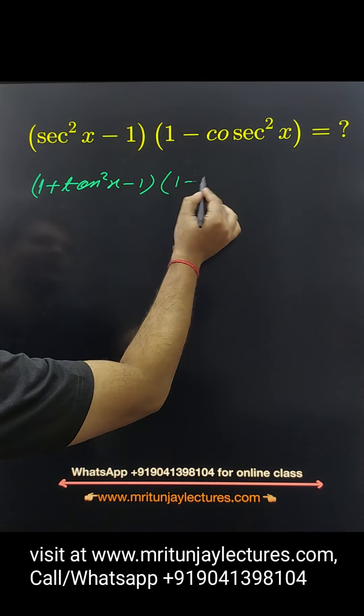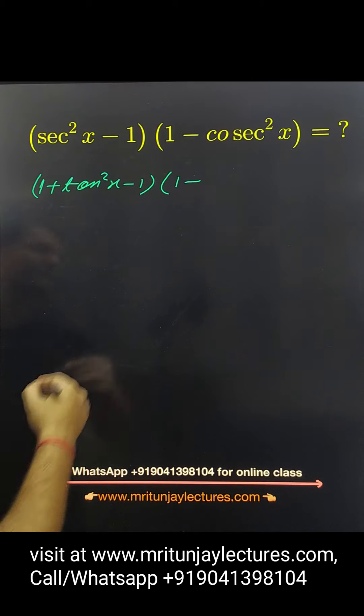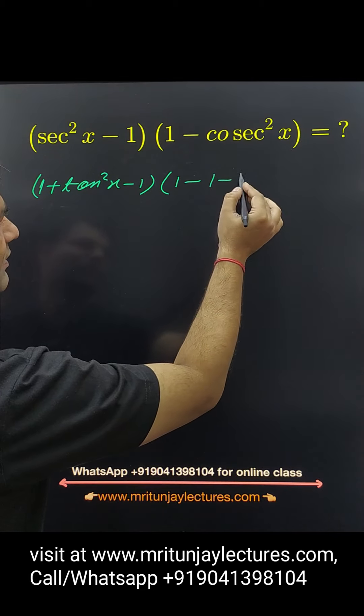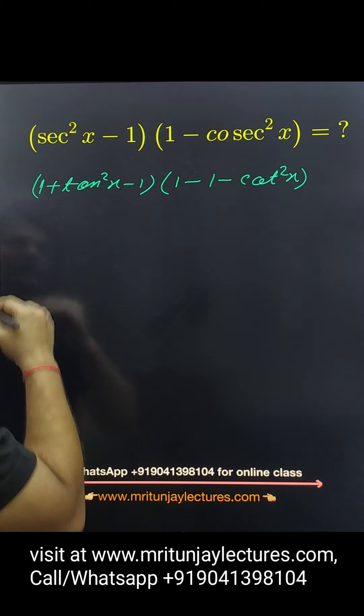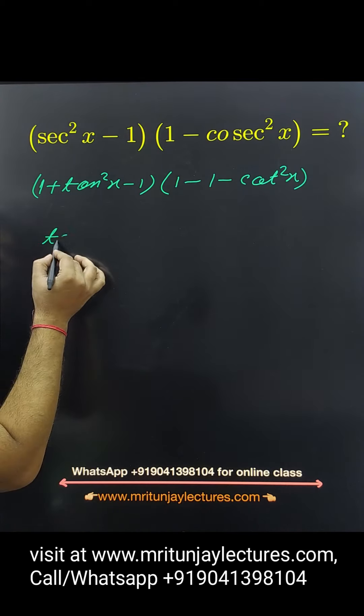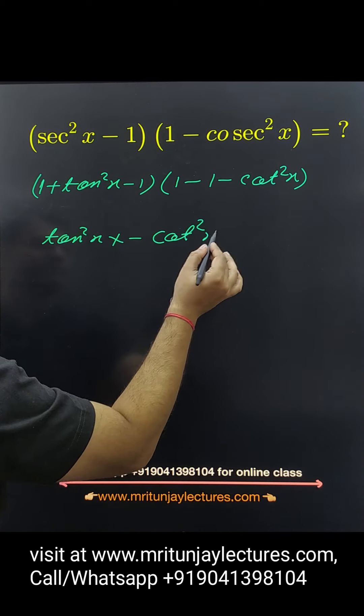Simply, cos square x is also written as 1 plus cot square x, here minus 1 minus cot square x. That value is tan square x and that value is minus cot square x.